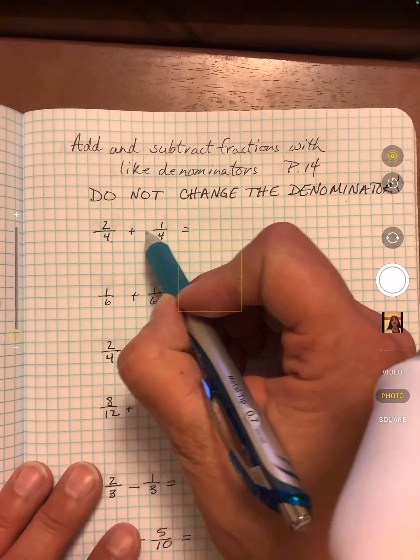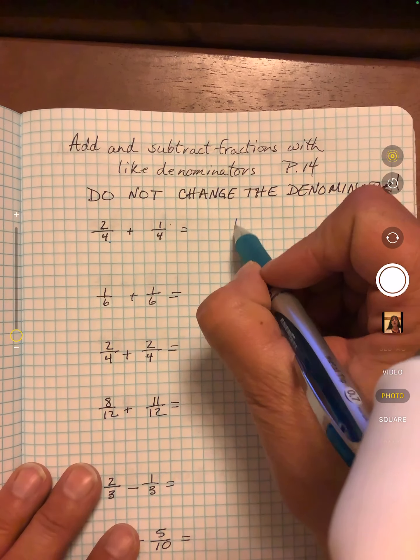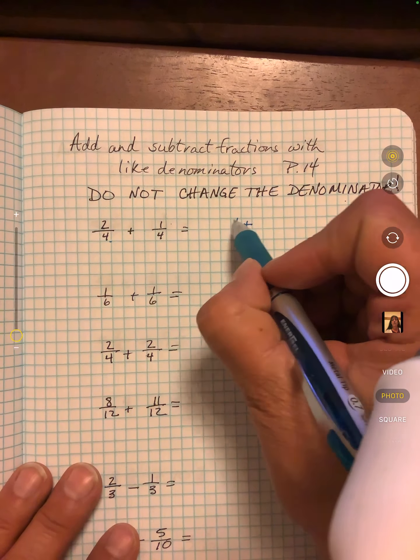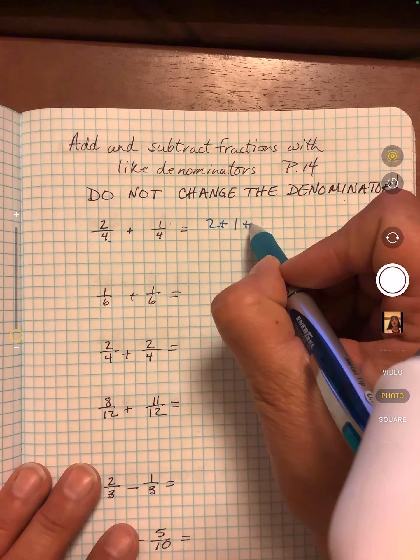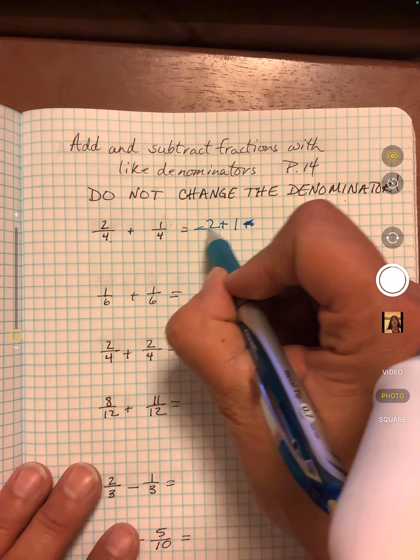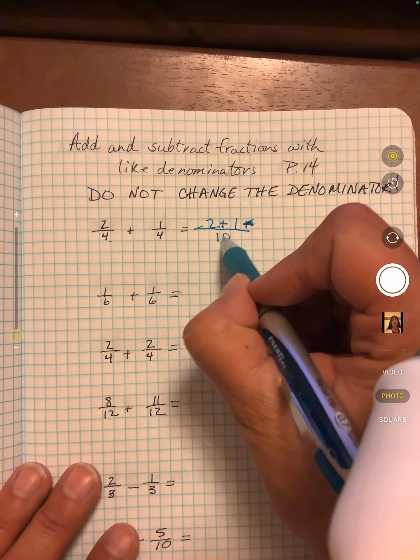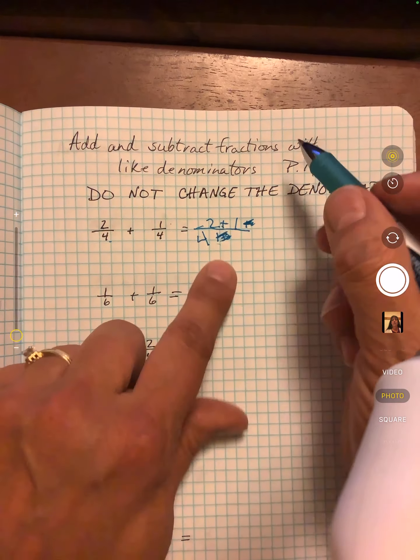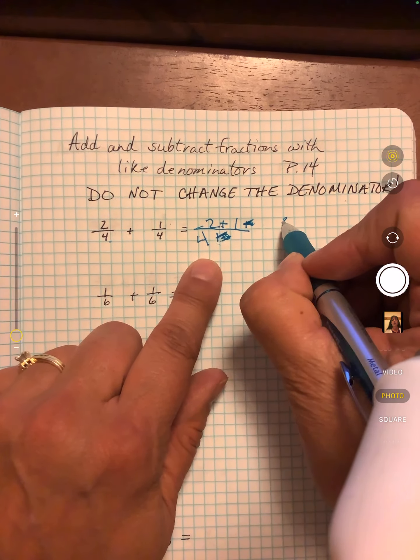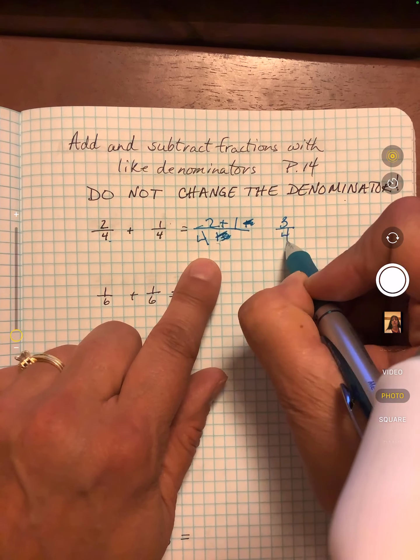So when I add two fourths plus one fourth I could write it like this. Whoops. I'm sorry. Two plus one over four because the four isn't changing. Boy am I messing you up right now. So two plus one would be three fourths.